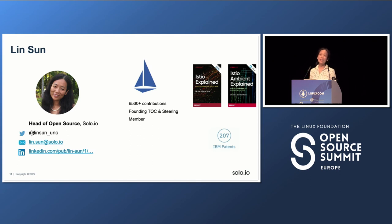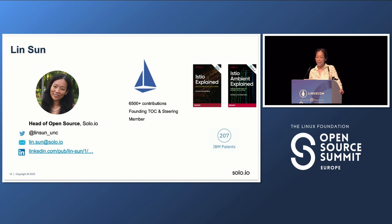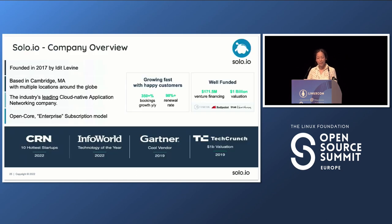I wrote two books about Istio, now working at Solo. Before I joined Solo — which was a little over two and a half years ago — I worked at IBM. I was a Master Inventor at IBM. Right before I left IBM, I took a screenshot of how many patents I contributed: 207. That means I was a co-inventor for those 207 patents, which IBM owns, but it's nice to have my name on them. How many of you know Solo.io?